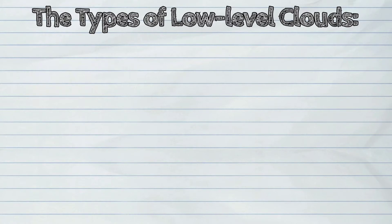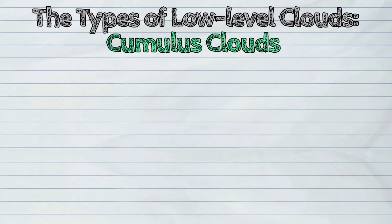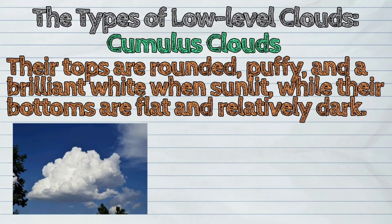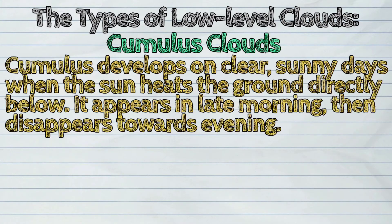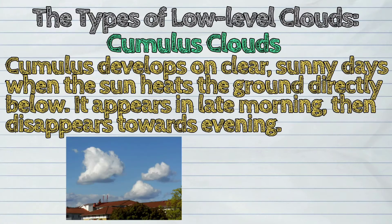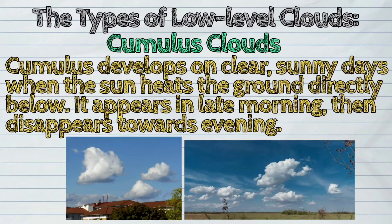First, the cumulus clouds. Their tops are rounded, puffy, and a brilliant white when sunlit, while their bottoms are flat and relatively dark. Cumulus develops on clear, sunny days when the sun hits the ground directly below. It appears in late morning, then disappears towards evening.